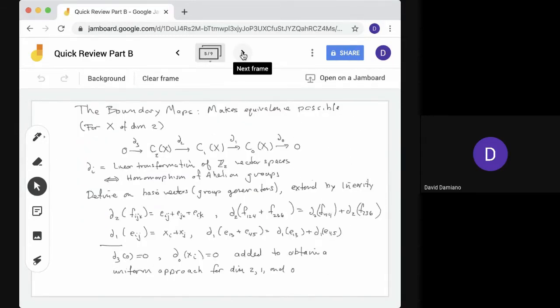So we don't have just the vector spaces. We also have boundary maps. This is what makes equivalences possible. So here I've written it down for X of dimension 2. So we see we have the chain groups C2, C1, C0, and the boundary goes between them. And you notice we've also added a 0 on the left and a 0 on the right. That's so at each C2, C1, and C0, we can treat them in the same way. We need to have the incoming boundary and the outgoing boundary. So each boundary i is a linear transformation of Z2 vector spaces, or we could say it's a homomorphism of abelian groups. So we can define a linear transformation by defining it on basis vectors, or we could say group generators.